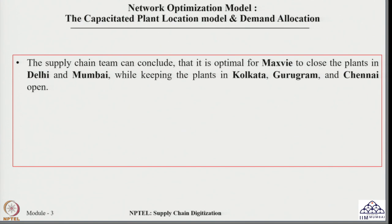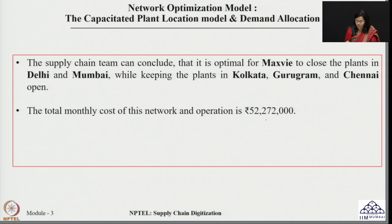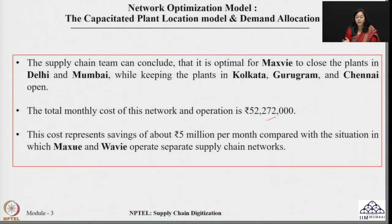Comparing the two solutions: previously, the demand allocation problem was solved separately for both companies. After merging and redesigning the supply chain network, MaxHui can close the plants in Delhi and Mumbai and operate with just three plants. The total cost is around ₹5 crore 22 lakh 72 thousand rupees, representing savings of about five million rupees per month compared to operating individually.